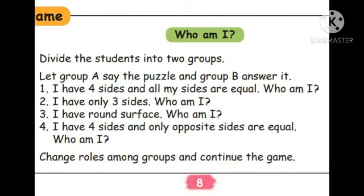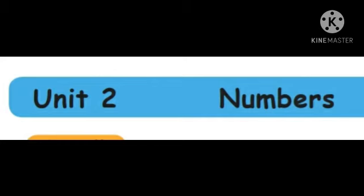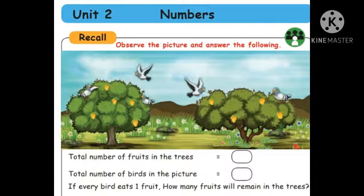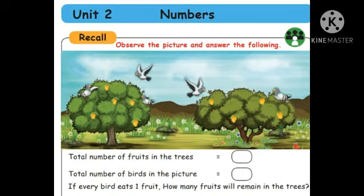Shall we go to the new lesson? Today we are going to start the new lesson. Page number nine — you have to take your book. Look at page number nine. If you have not bought the book, go to the school and clear the fees. We are going to learn subtraction. The topic is Numbers and the subtopic is Subtraction.